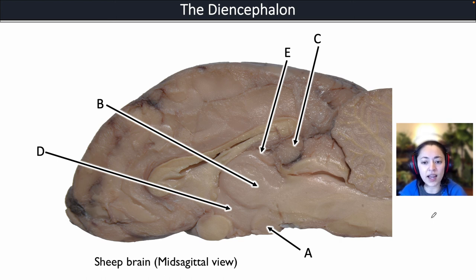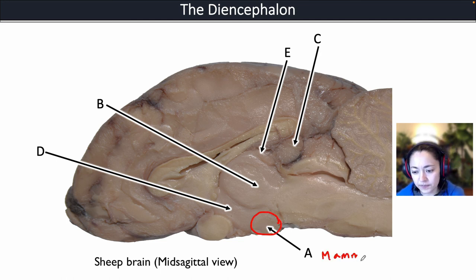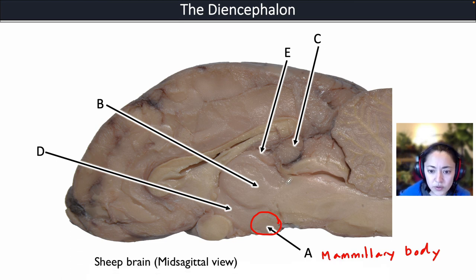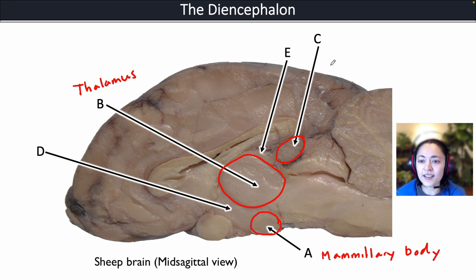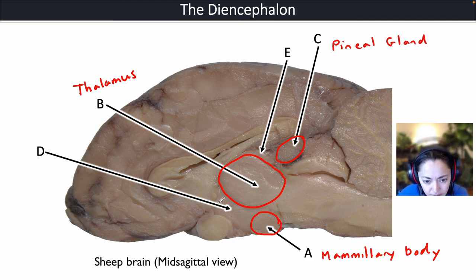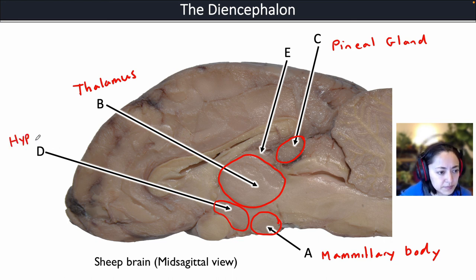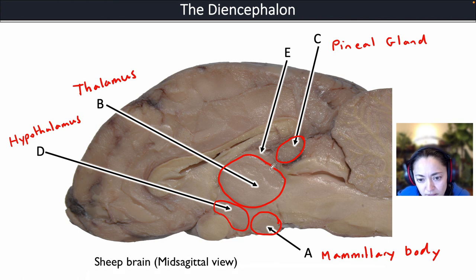When you perform a dissection in anatomy and physiology, often you'll be dissecting a sheep brain rather than a human brain. In the sheep brain, A is pointing to the circular structure — that is the mammillary body. B is pointing to the large center area of the diencephalon, which is the thalamus. C is pointing to the pine-cone-shaped structure in the back — that is the pineal gland. D is the region below the thalamus, which is the hypothalamus. E is pointing to the thin area above the thalamus — that is the epithalamus.